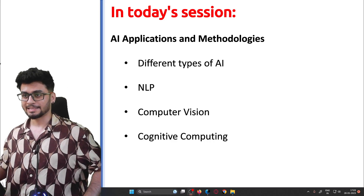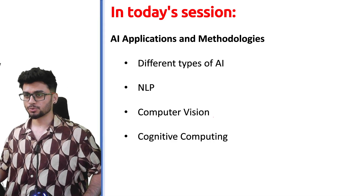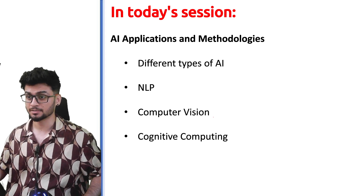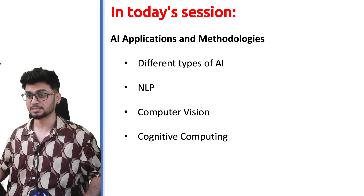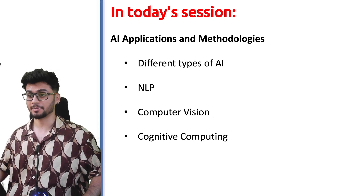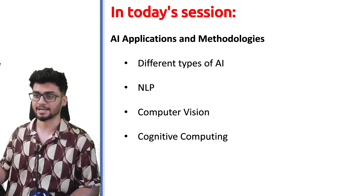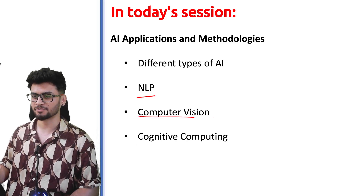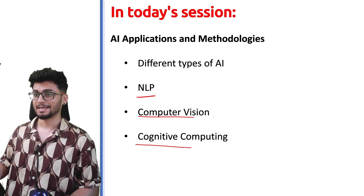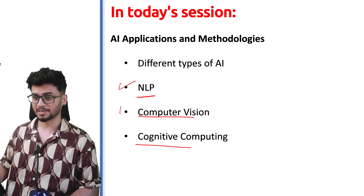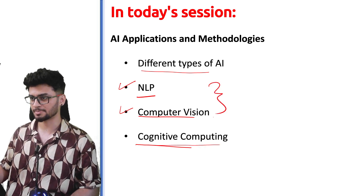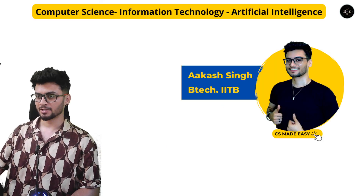Hey guys, welcome back. In this session we are going to cover the different types of AI characteristics, then we will move on to various examples of where AI is actually used, like NLP and computer vision. We will also talk about cognitive computing. In this chapter, these two parts are quite important — focus on this part more.